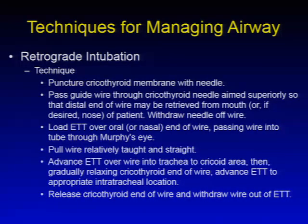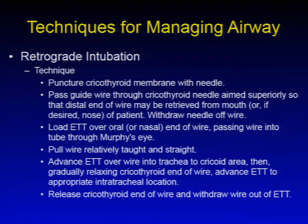The technique for retrograde intubation includes puncture of the cricothyroid membrane with a needle, then passing a guide wire through the needle aimed superiorly so the distal end may be retrieved from the mouth or nose. Withdraw the needle off the wire, load an endotracheal tube over the oral or nasal end through Murphy's eye, pull the wire taut, advance the endotracheal tube over the wire to the cricoid area, then gradually relax the cricothyroid end and advance to the appropriate location, then release and withdraw the wire.